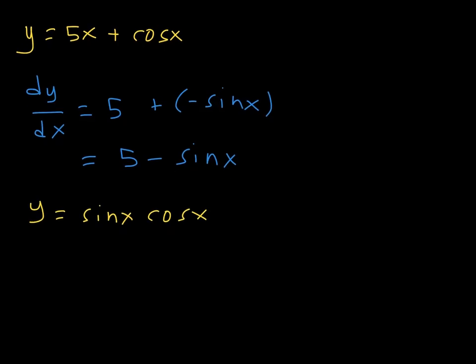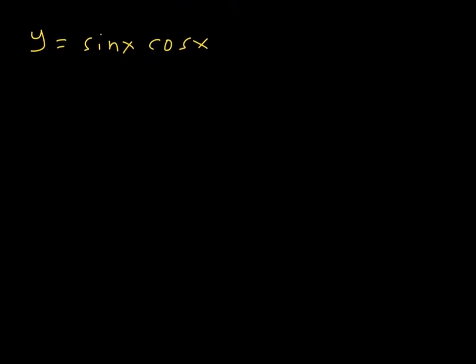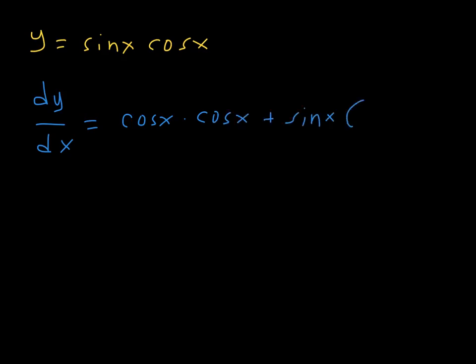For y equals sine of x times cosine of x, this is a product so we need the product rule. dy/dx equals the derivative of sine of x — cosine of x — times cosine of x, plus sine of x times the derivative of cosine of x — negative sine of x. So this equals cosine squared of x minus sine squared of x. Note: this is not equal to one; that would only be the case if this were addition.